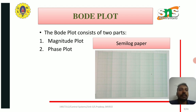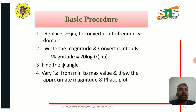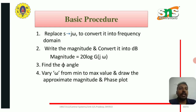The Bode plot consists of two parts: the magnitude plot and the phase plot. The procedure for drawing a Bode plot: the first step is to replace s with jω to convert it into the frequency domain. Write the magnitude and convert it to dB: magnitude = 20 log |G(jω)|. Find the angle, vary ω from minimum to maximum, and draw the approximate magnitude and phase plot.